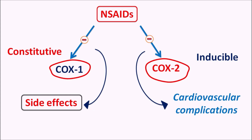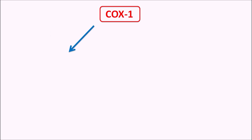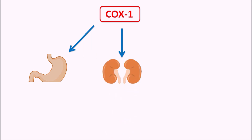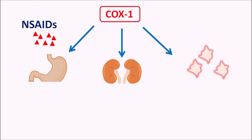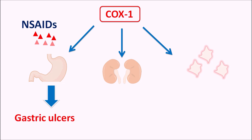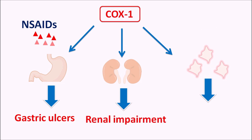COX-2 is not completely inducible — it is somewhat constitutive at a few organs, where its inhibition may lead to cardiovascular complications. COX-1 is the main constitutive enzyme, present at various organs. One important organ is the stomach, second is the renal system, and it is also expressed at the platelets. NSAIDs can inhibit COX-1 enzyme activity at all these organs. By acting on the stomach they can produce gastric ulcers, by acting on the renal system they can produce renal impairment, and by acting on the platelets they can produce bleeding disorders.